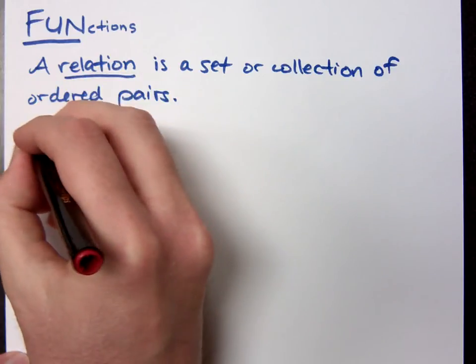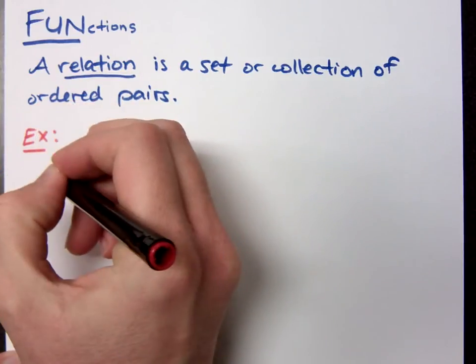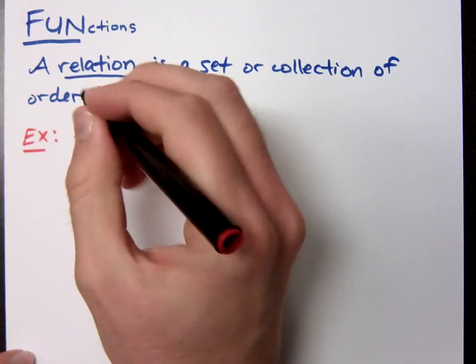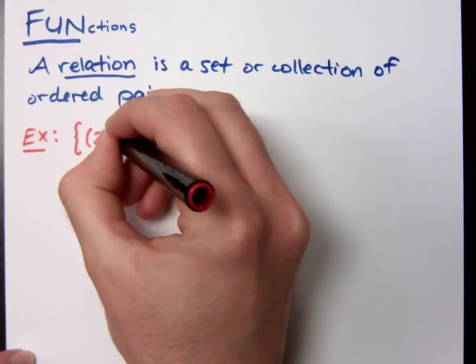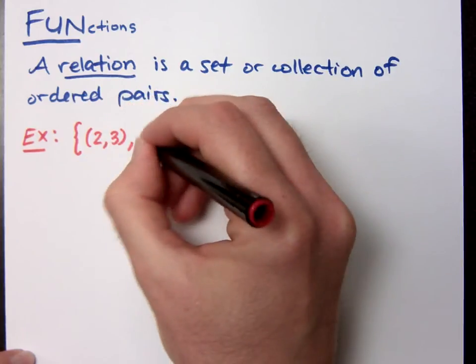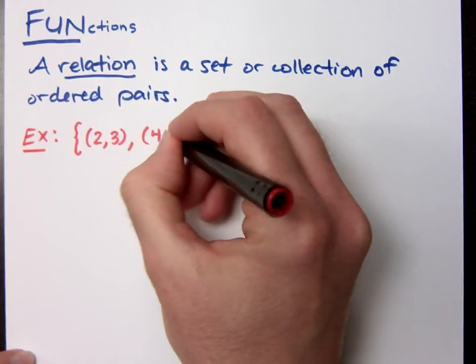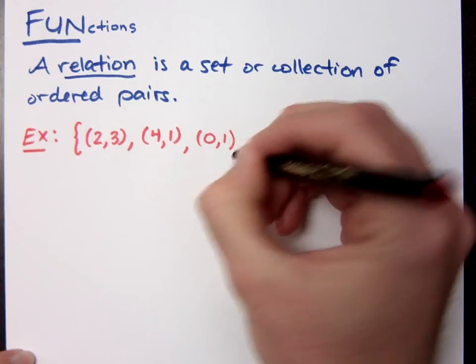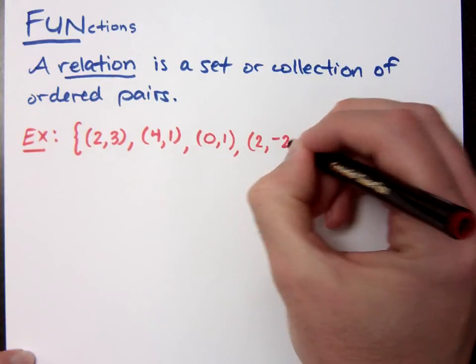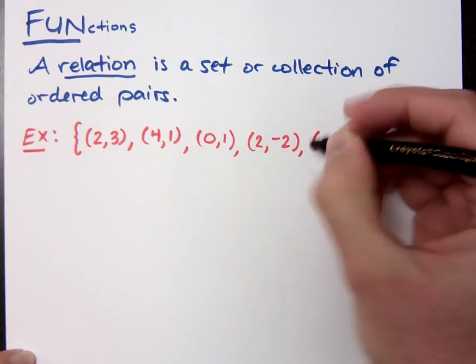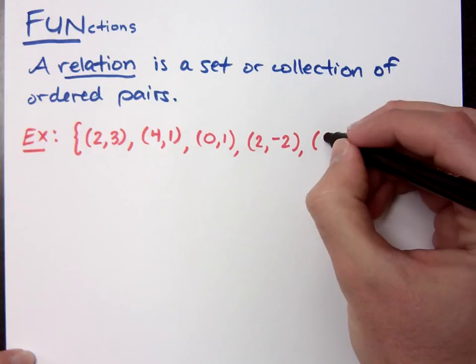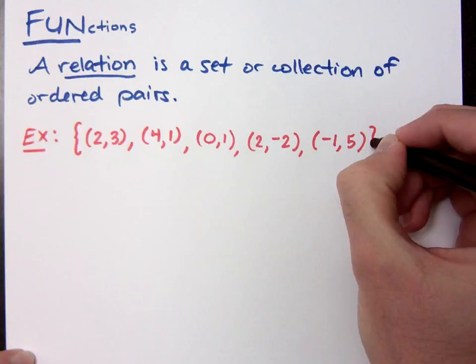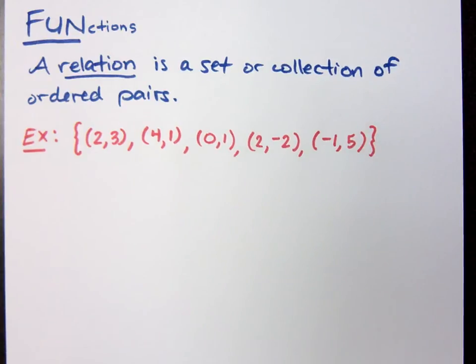A relation is a set or a collection of ordered pairs. For example, now I'm going to use the set builder notation, so we're curly brackets here. I'm just going to list some ordered pairs: (2,3), (4,1), (0,1), (2,-2), and let's do (-1,5).